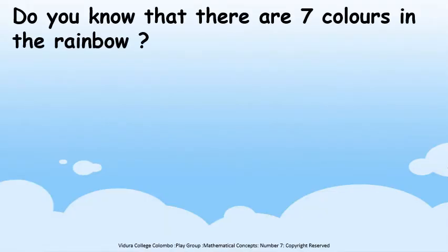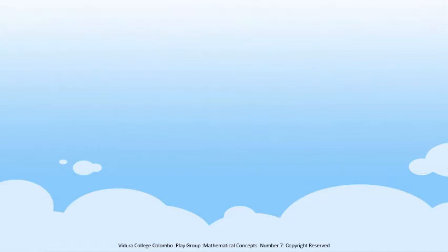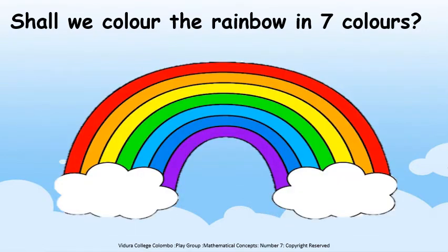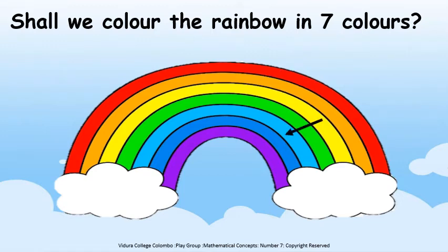Do you know that there are 7 colours in the rainbow? Shall we colour the rainbow in 7 colours? Here, see. There are 7 colours in the rainbow. Shall we count and see? 1, 2, 3, 4, 5, 6, 7.